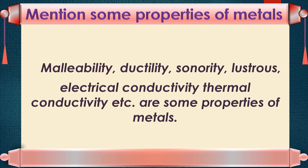Malleability means metals can be beaten and made into thin sheets. Ductility means drawn into fine wires. Based on these properties, we use various metals for various purposes — like gold and silver as jewelry, copper, iron, and aluminum for making conducting wires and utensils, etc. We use many household articles made up of metals and their alloys at home.